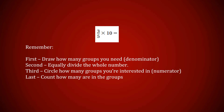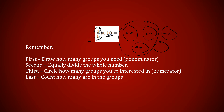Three-fifths of 10. Let's do the fraction part first — I'm counting three of the five groups, so I need five groups: one, two, three, four, five. I'll go ahead and circle three of them. Now divide 10 by the five groups: 10 divided by 5 is 2, so I have two in each group. Count three of those groups: two plus two plus two equals six.